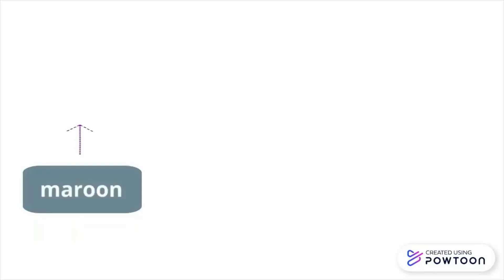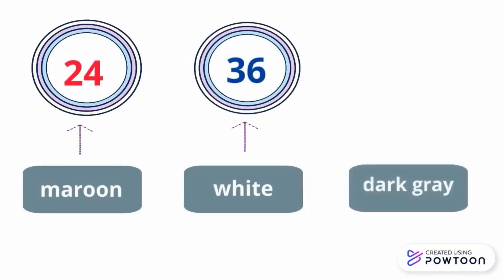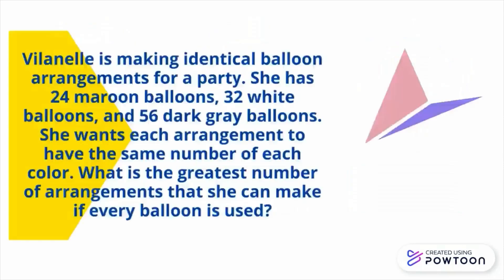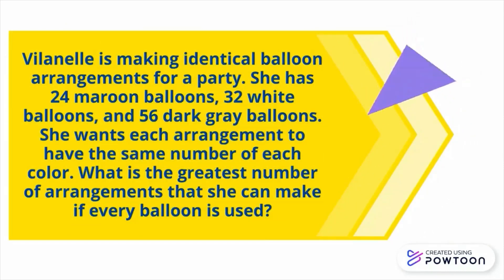Let us check the data. How many maroon balloons are there? There are 24. White balloons are 32. Dark gray balloons are 56. Our keywords are: identical, the same, and greatest. Therefore, we are to use the GCF process.